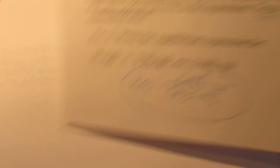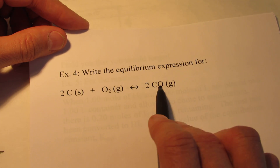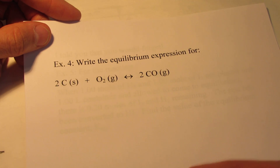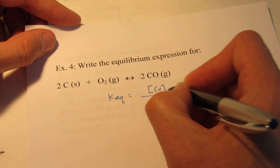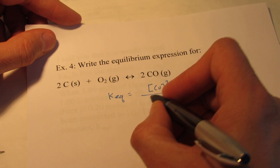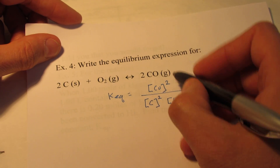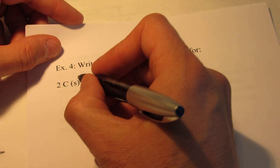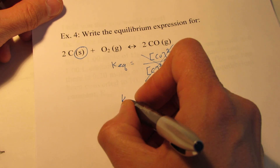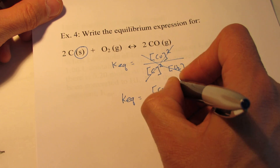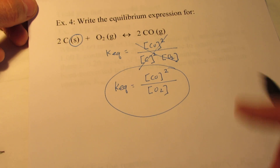Now you try one on your own. Take a minute and write the equilibrium expression for this reaction: 2C and O₂ react to form 2CO. Pause this video and try it. Hopefully you started out with K-eq. Did you put the concentration of your product on top and square it? Many of you probably put carbon on the bottom and squared it, and oxygen gas also on the bottom. If you did this, you are wrong. Carbon is a solid — what did we say we leave out of equilibrium expressions? Solids and liquids. So the appropriate expression is the concentration of CO squared over the concentration of oxygen gas.